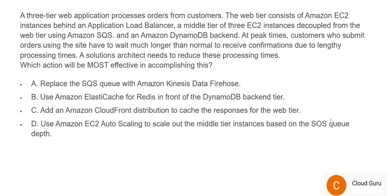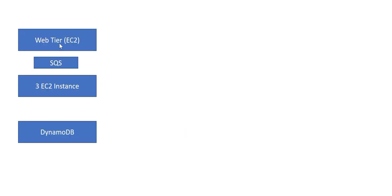Let's see question number 56. You may pause this video here to read it carefully. We have a three-tier application: the web tier, the middle tier, and the database tier. The database tier is on DynamoDB. The web tier has multiple EC2 instances and the middle tier has three EC2 instances. In between, there is an SQS queue. When a web tier request comes in, it goes via SQS to these three EC2 instances — that's how isolation is maintained.